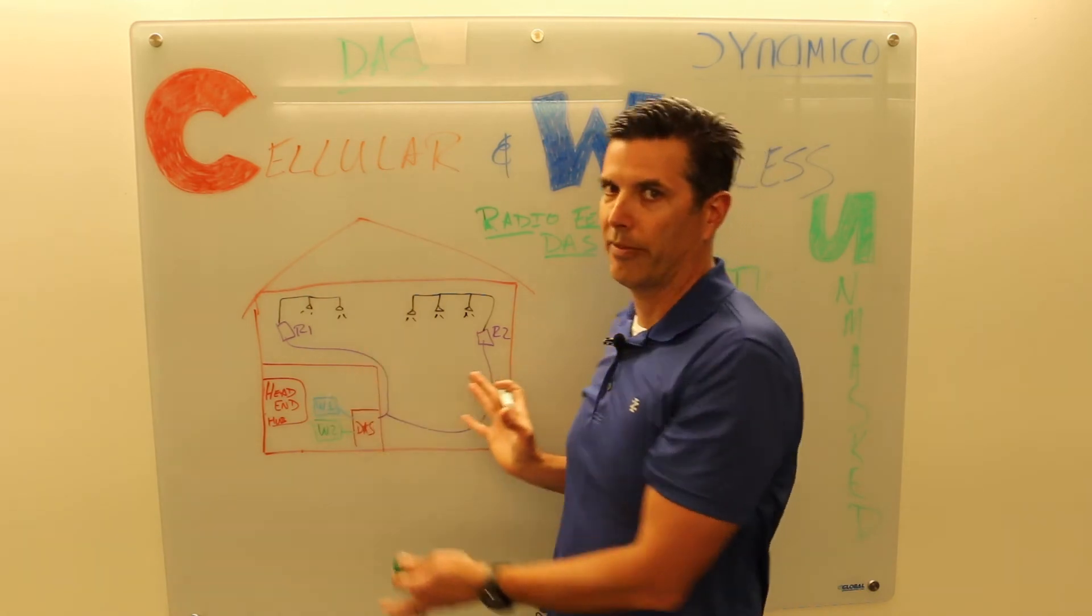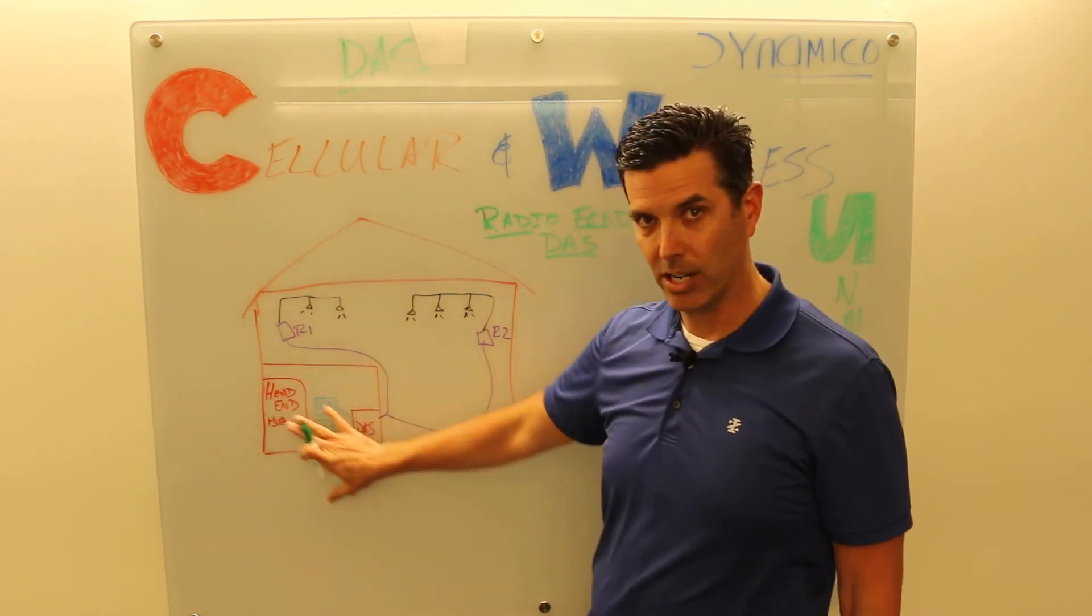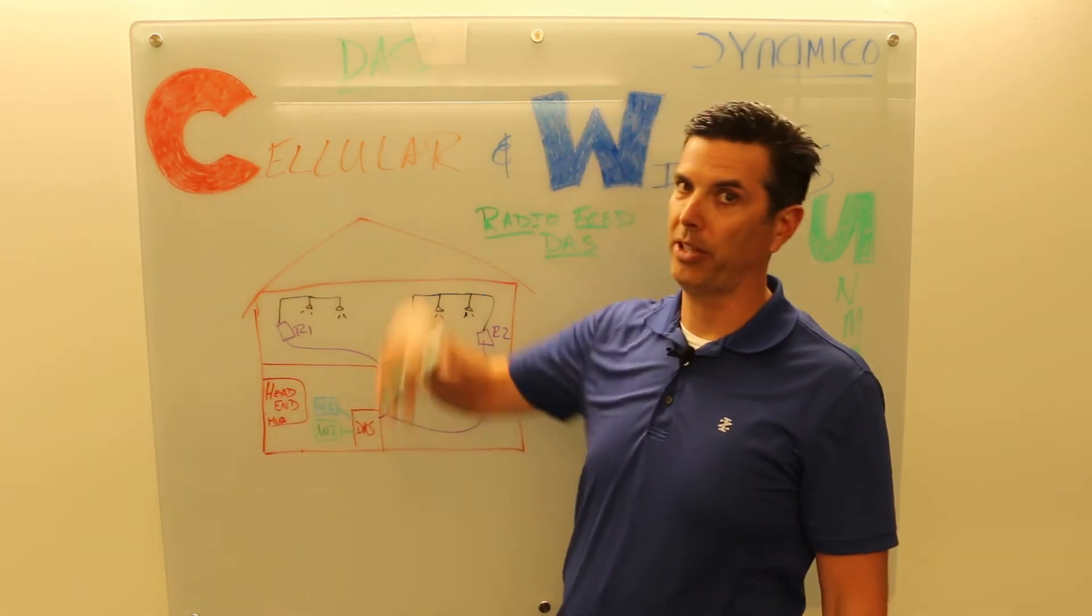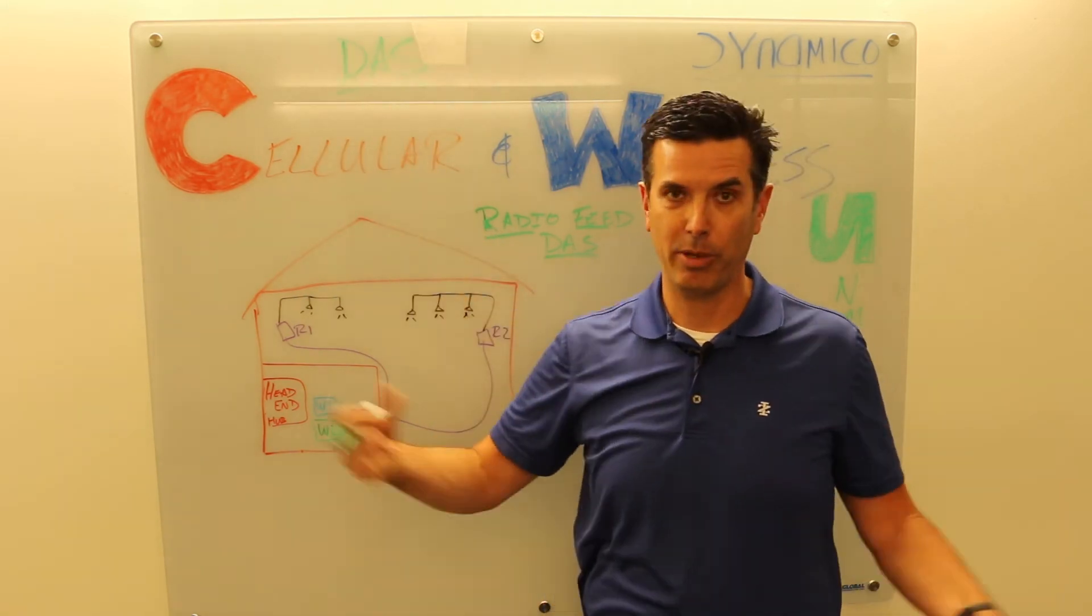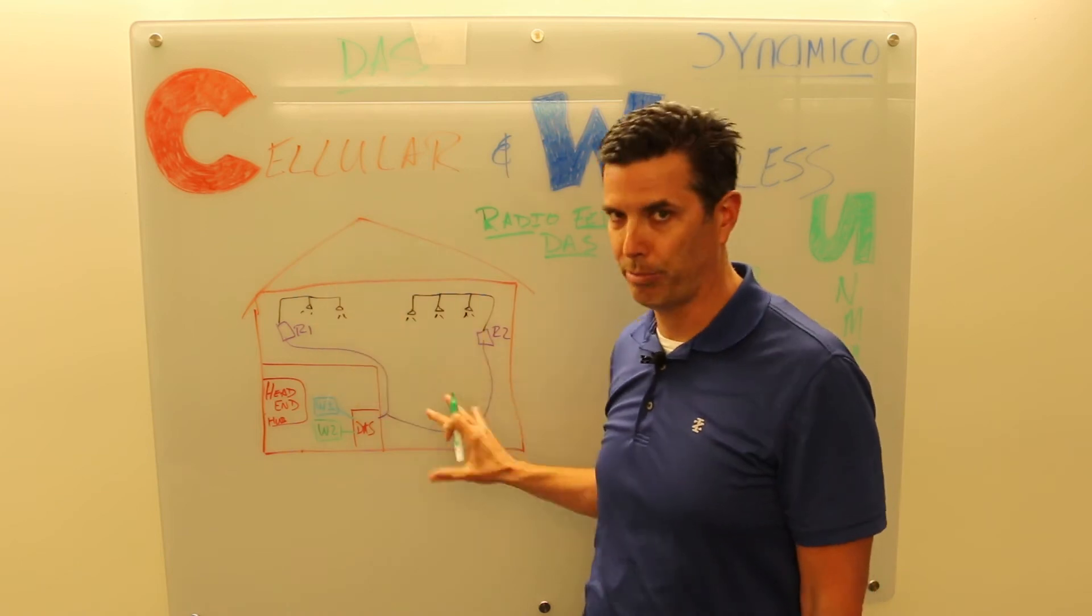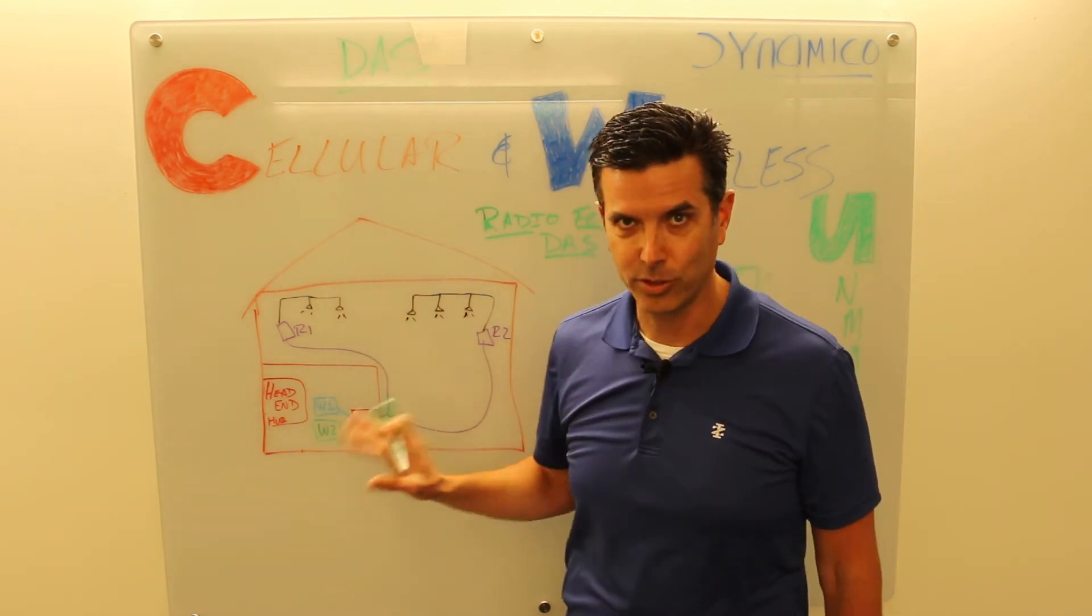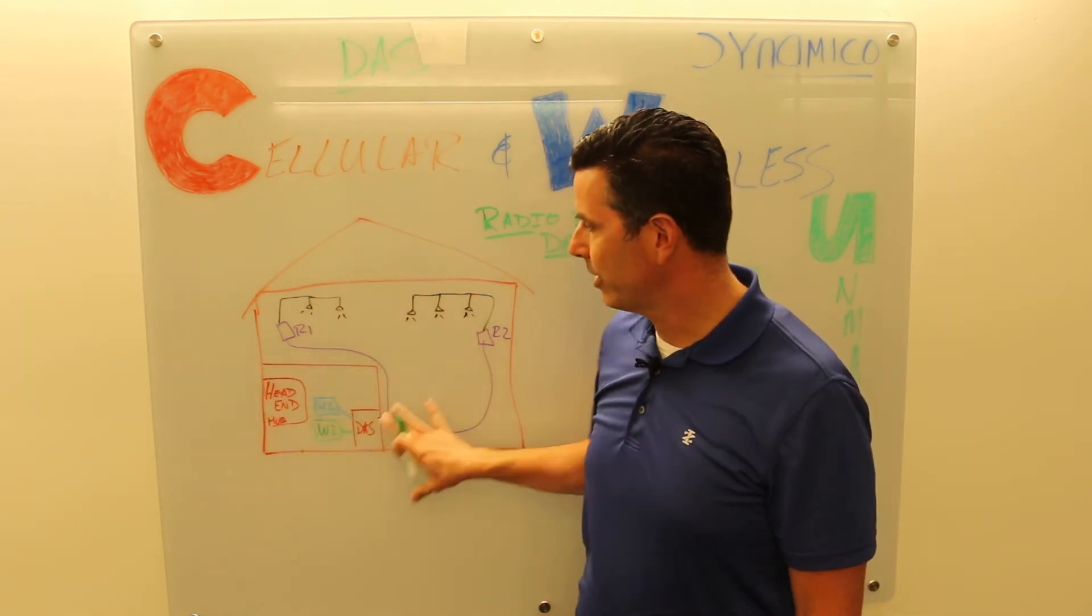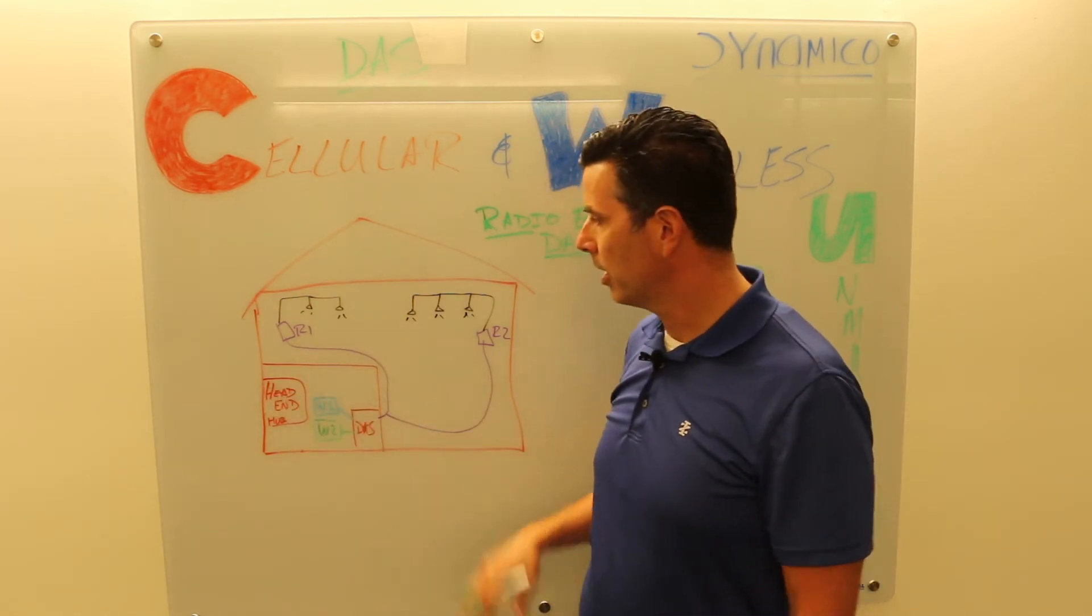What you have in the building, let's say this is just a basic office building, you have a head end or a hub somewhere in the building. It can be in the top of the building, the bottom of the building, it can be pretty much anywhere. It can even be off-site and you can use a fiber link to get back to the building. Let's not complicate things too much, we'll say this is inside the building, the head end or the hub. Those are equivalent terms.